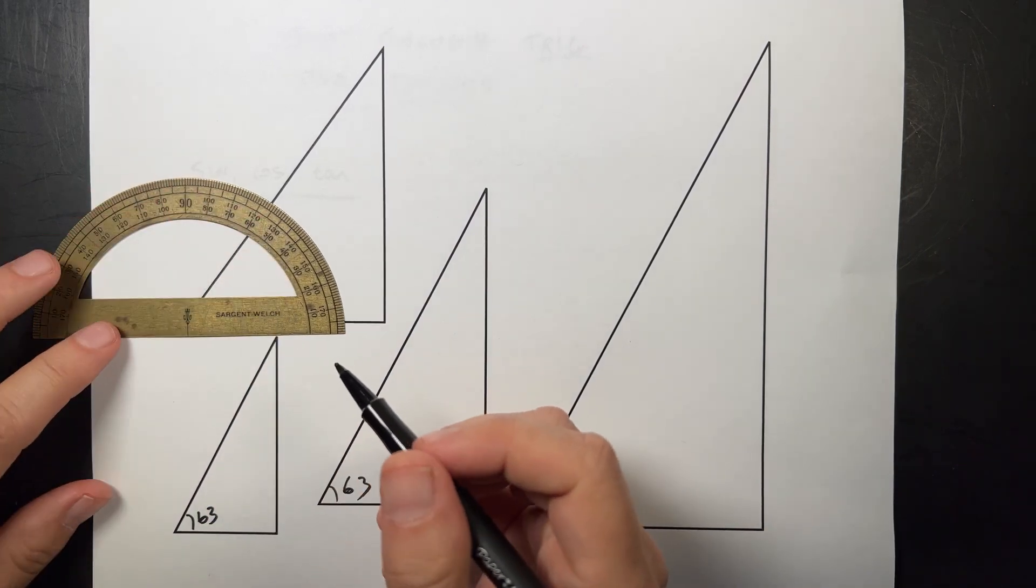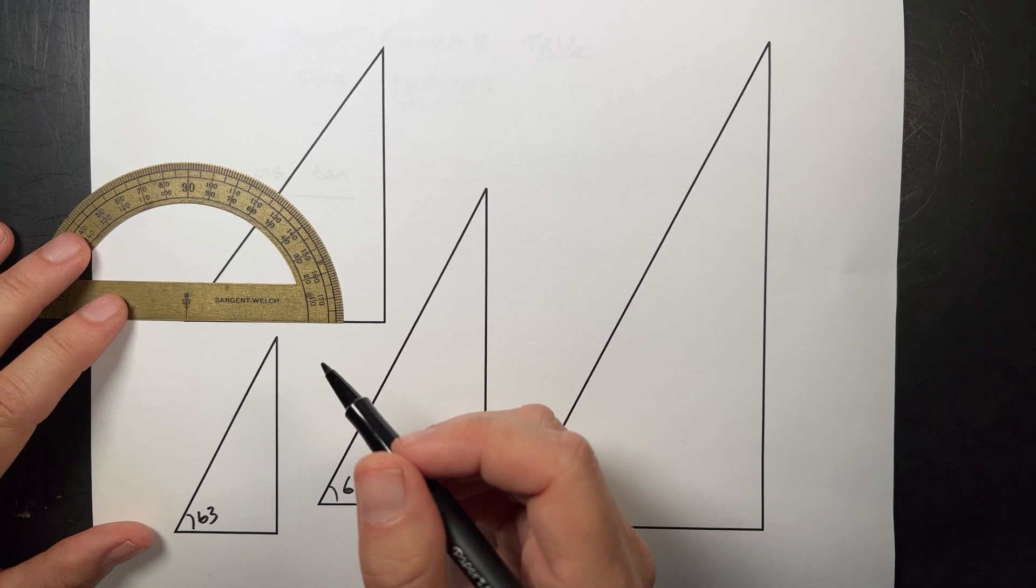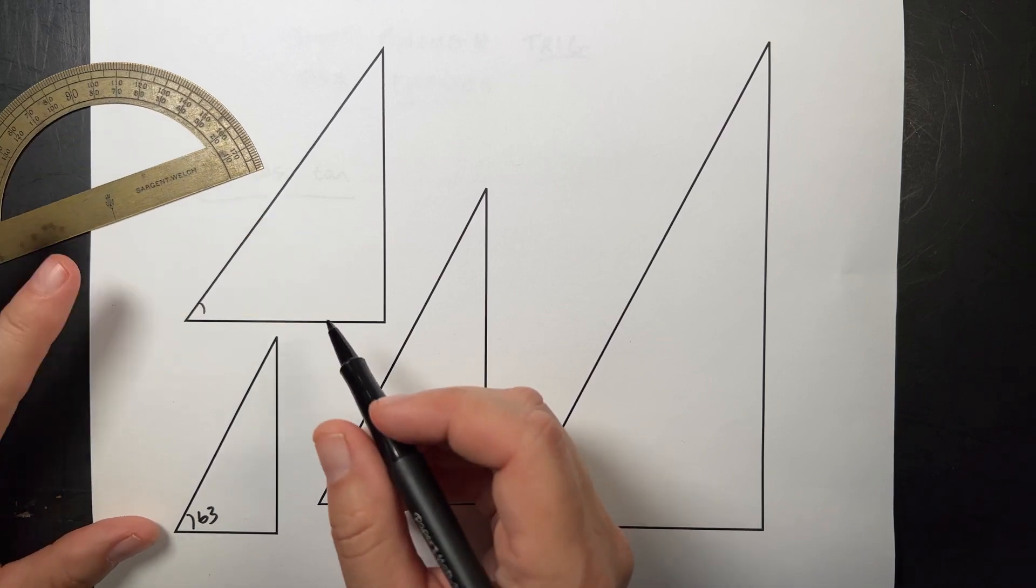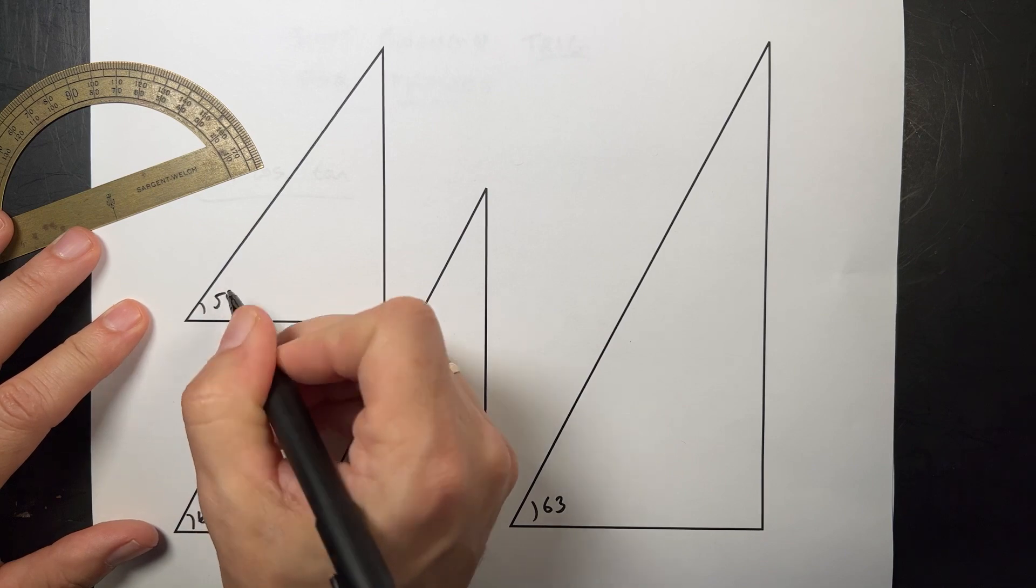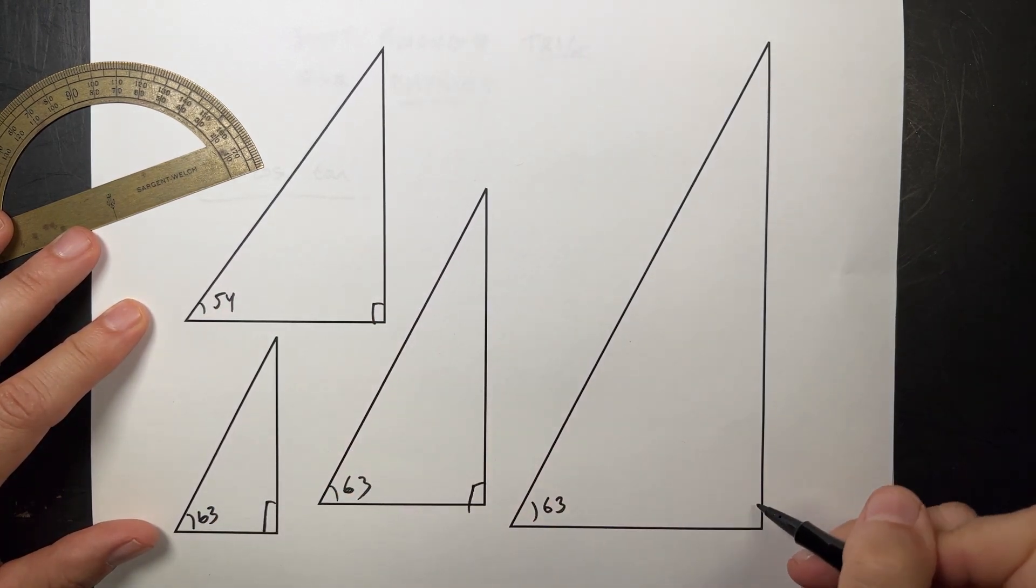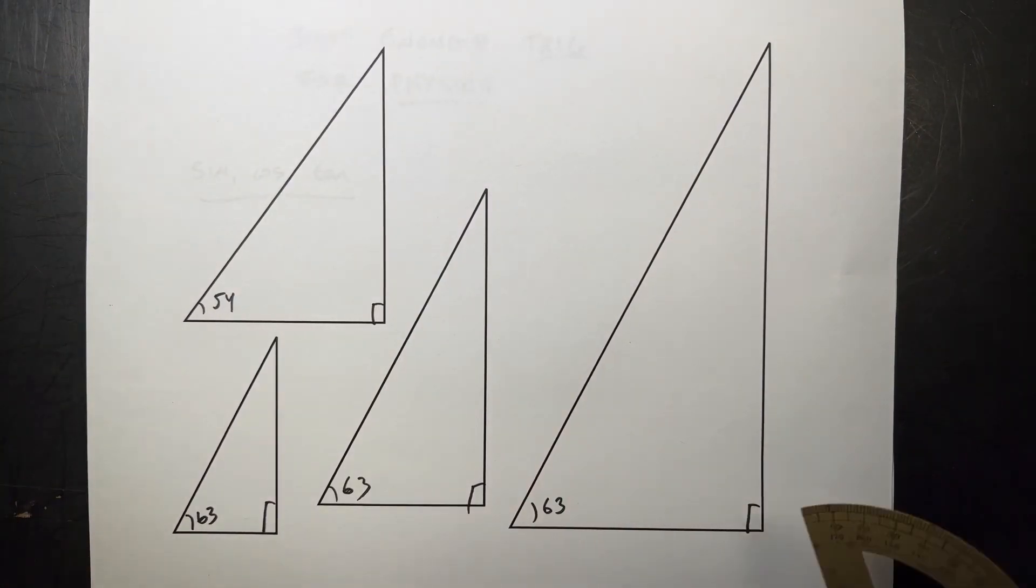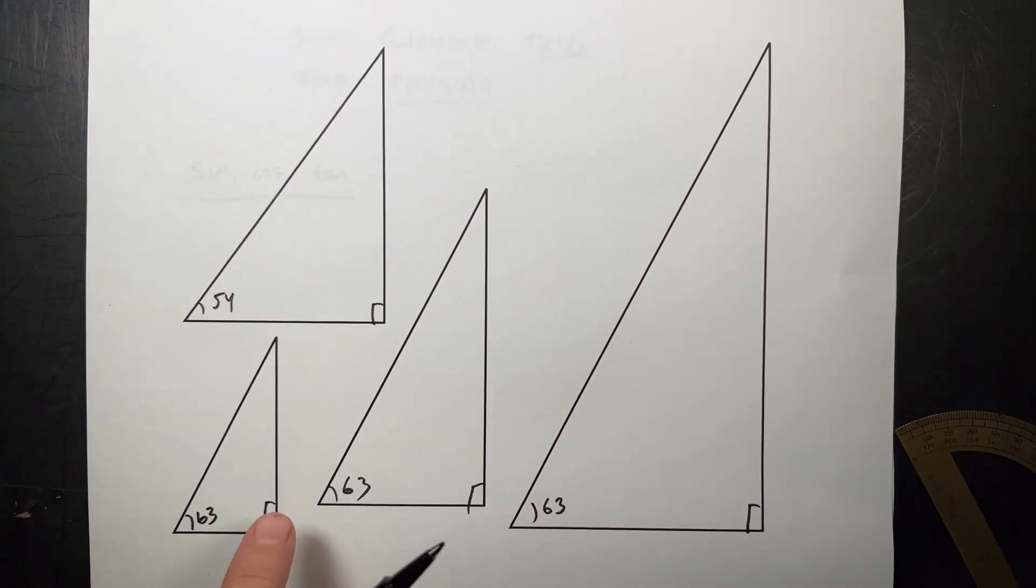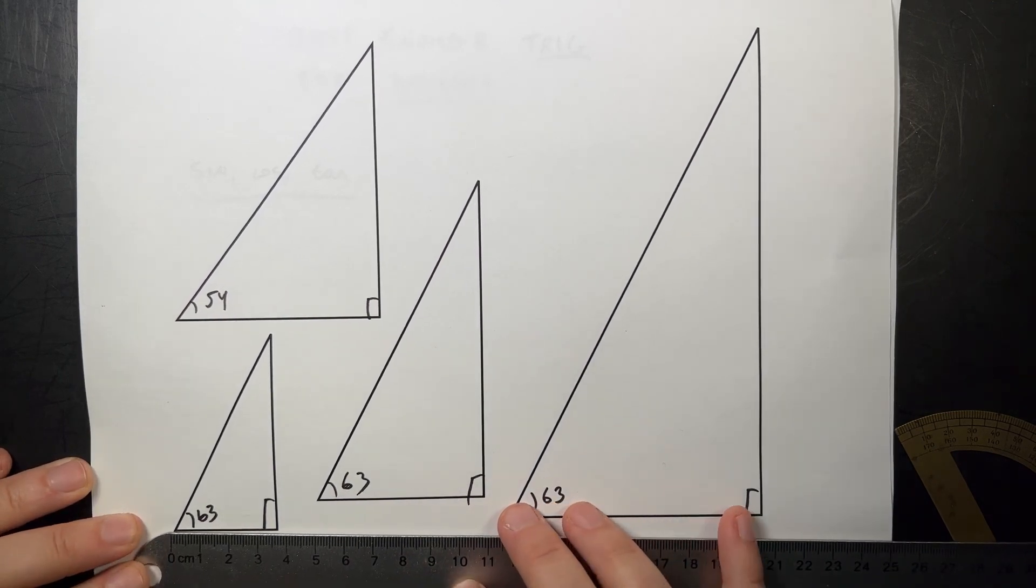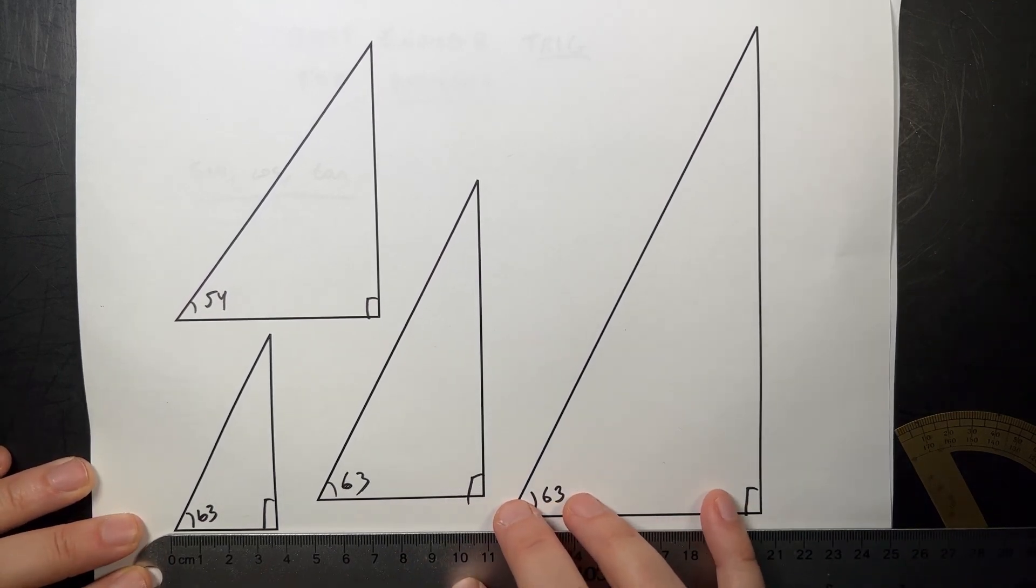This one's not. Right there I get 54. These are right triangles, those right angles, I don't care about the other angle right now. Next I want to measure the lengths of these sides using centimeters. Let's measure these really quickly. I'm doing this live. I'll do it live.